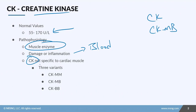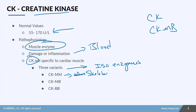CK is not specific just to cardiac muscle, but there are three variants called isoenzymes that are specific to different types of muscles. CK-MM is specific to skeletal muscle, CK-MB is specific to cardiac muscle, and CK-BB is specific to the brain. The one we're most concerned about today is CK-MB.